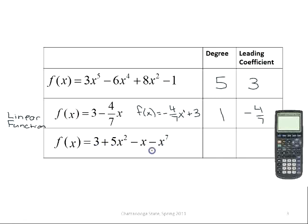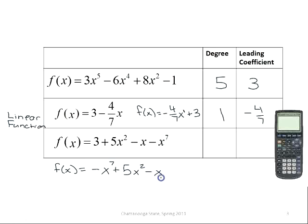The last polynomial has its order all mixed up. If we were to put it in descending order, the first term would be the one with the largest exponent — negative x to the seventh power. Then the next largest exponent gives plus 5x squared, then minus x, and finally plus 3. So the leading term is negative x to the seventh power, meaning the degree is 7 and the leading coefficient is negative 1.